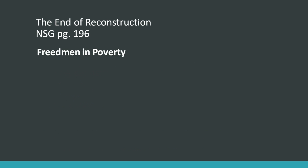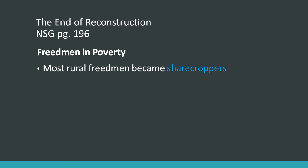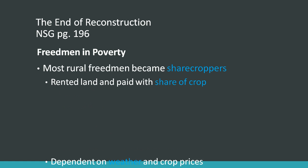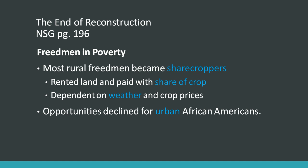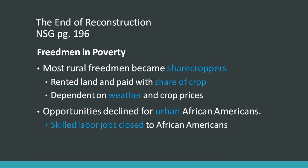Freedmen in poverty: most rural freedmen became sharecroppers. They rented land and paid with a share of the crop to the people that owned the land. This was dependent on weather and crop prices, so most sharecroppers were extremely poor. Opportunities declined for urban African-Americans as well — skilled labor jobs were closed to African-Americans because of segregation.